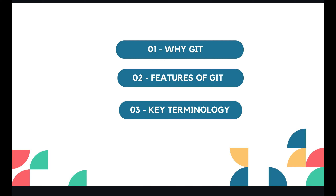Git and GitHub are tools used by developers to manage and collaborate on projects, ensuring smooth teamwork and efficient development. Git is a version control system that helps developers track changes to their code, keeping a history of all modifications so you can revert to previous versions if needed. GitHub is a platform built around Git that provides a centralized location for hosting Git repositories, with additional features like issue tracking, project management tools, and code review capabilities.